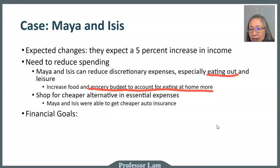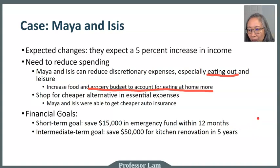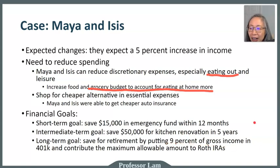They also established some financial goals. We determined they need about fifteen thousand dollars in their emergency fund, and their goal is to have that in 12 months. They also want to renovate their kitchen, which they expect will cost fifty thousand dollars, and hope to do that in the next five years. Their long-term goal is to save for retirement — right now their goal is to put nine percent of their income into a 401k and also contribute to a Roth IRA.